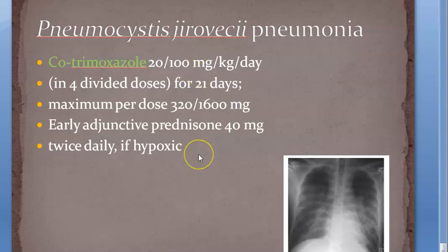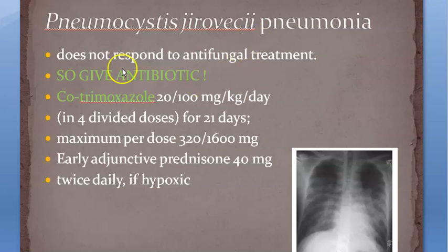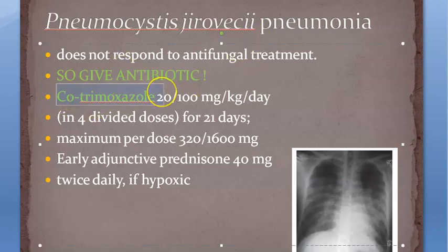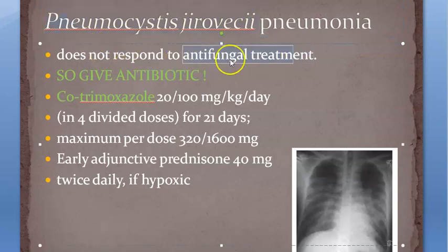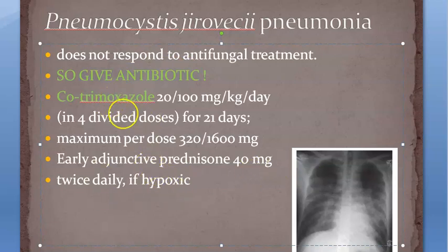One important thing to note: cotrimoxazole is an antibiotic - it targets bacteria. Pneumocystis jirovecii is a fungus, a yeast-like organism, but it does NOT respond to antifungal treatment. That is why you give this antibiotic. It does not respond to antifungal treatment - cotrimoxazole, the antibiotic, is what works.